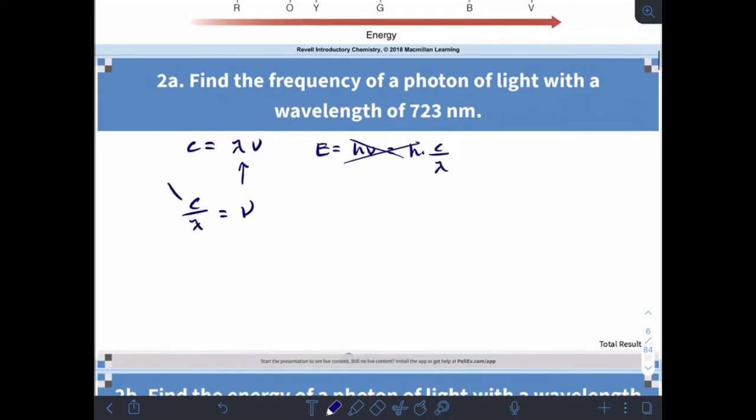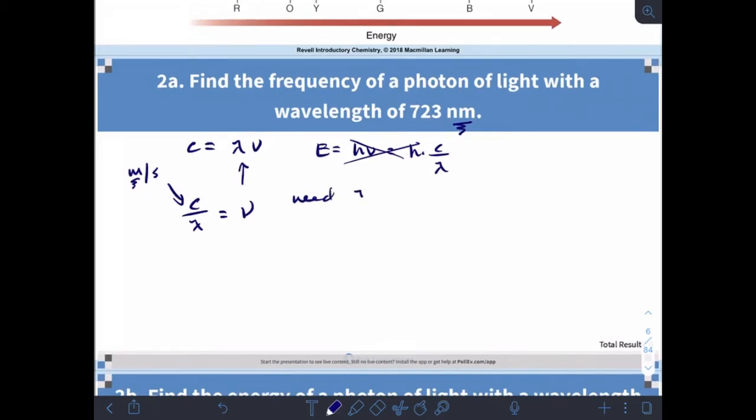If I divide both sides by lambda, I get c over wavelength equals my frequency. Here's where we have to be careful—our units are in meters. We've got meters in our speed of light, but we're given wavelength in nanometers. We need the units to match, so I need lambda in meters. Good thing everybody's good at unit conversions by now. 723 nanometers, and one nanometer is 10 to the minus 9 meters, so that comes out to 7.23 times 10 to the minus 7 meters. That's our wavelength.